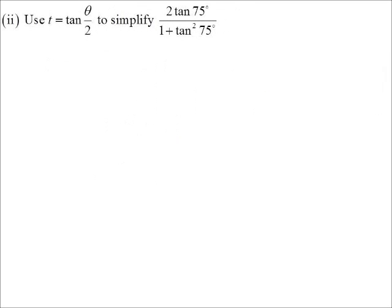Now we want to simplify two tan 75 on one plus tan squared. And they've given us a hint, use the T result to do it. Because the first time you look at that, you're thinking of the tan two theta result. But of course, tan two theta is two tan on one minus tan squared. So it's not the tan two theta result. But use the T result. Two T on one plus T squared. That represented which one of the three.